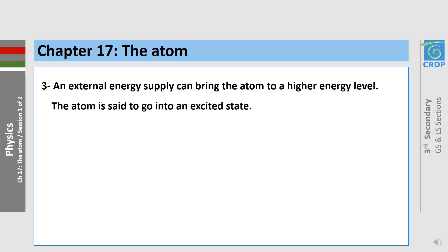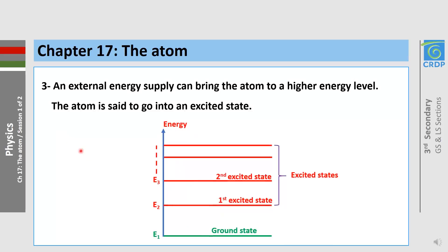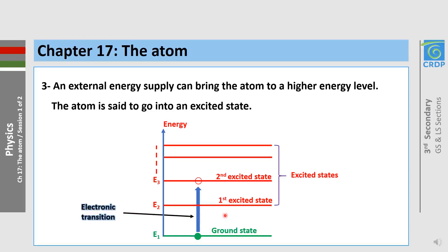Third assumption: an external energy supply can bring the atom to a higher energy level. The atom is then said to go into an excited state. This is an electronic transition.